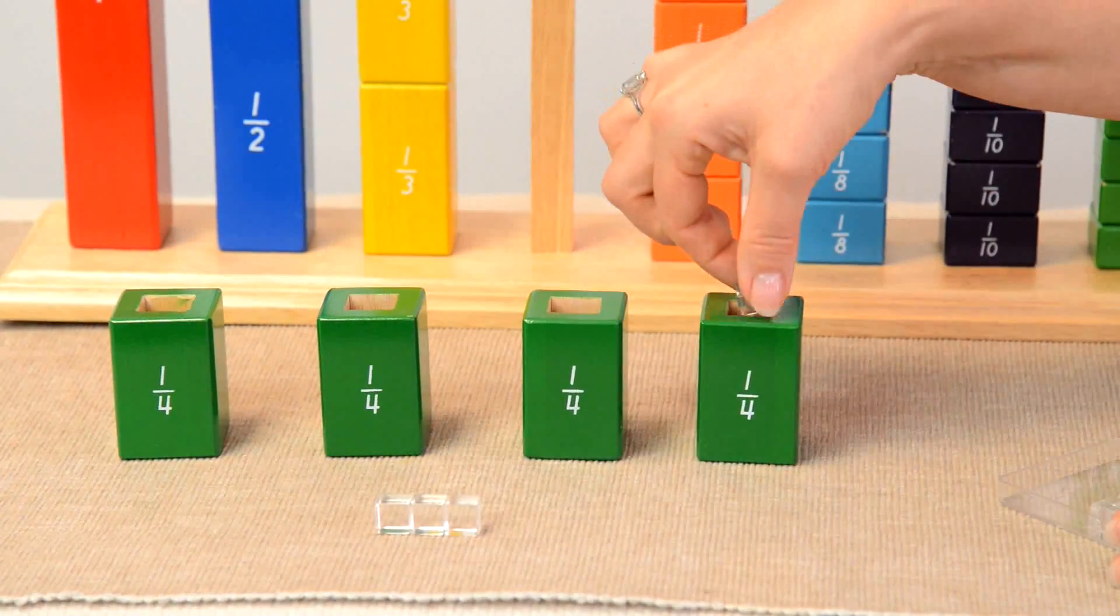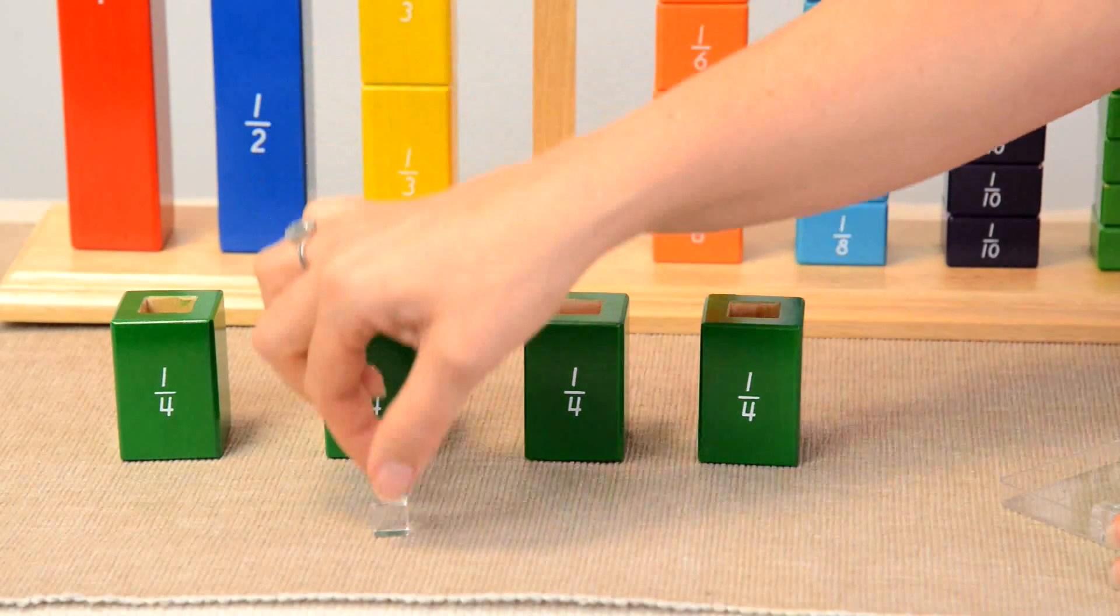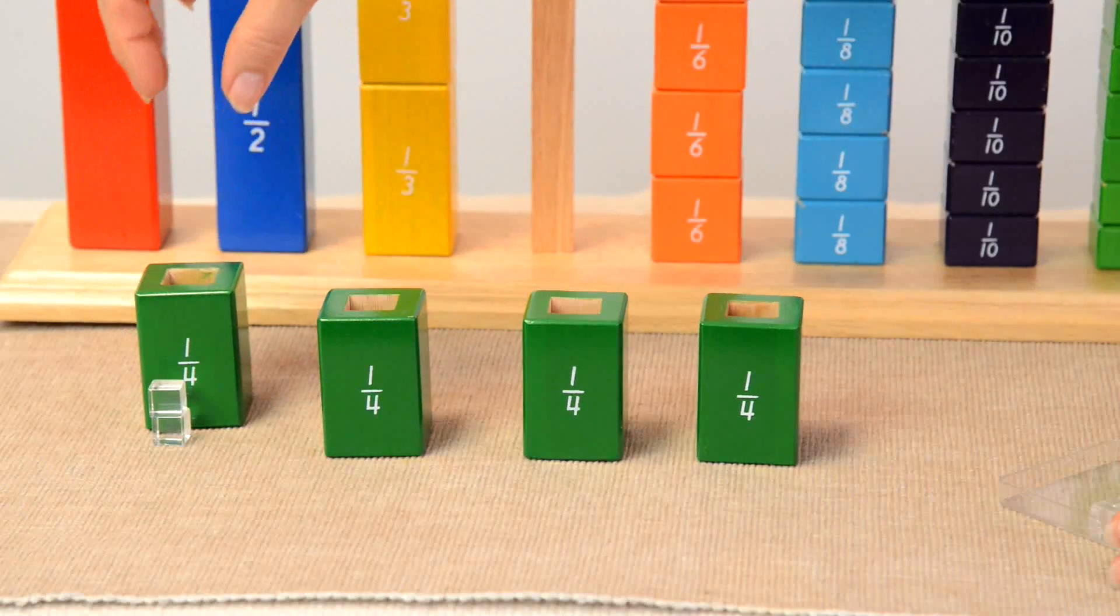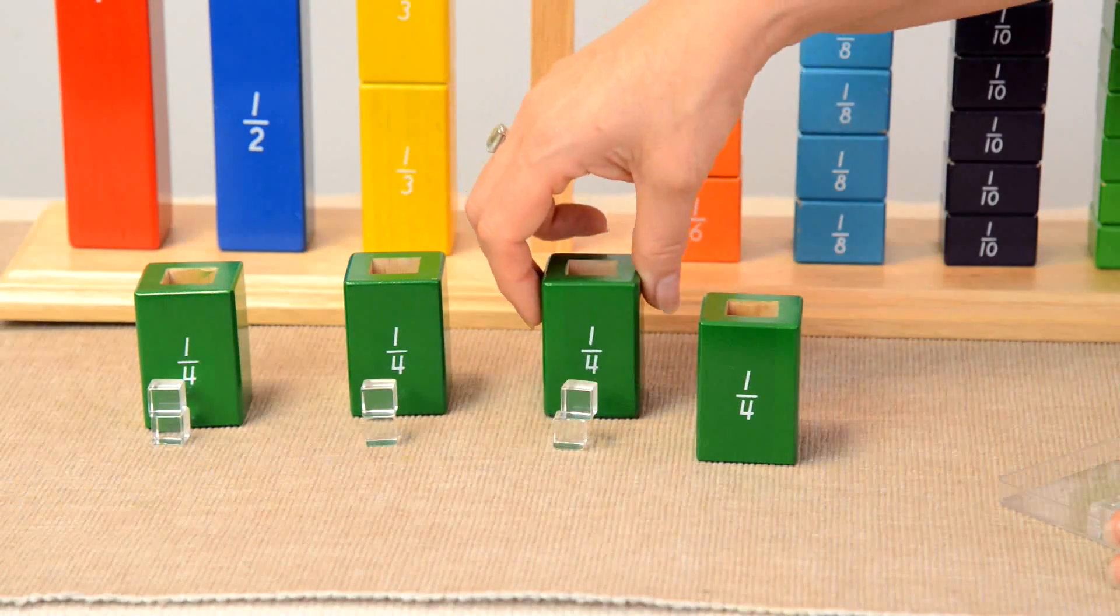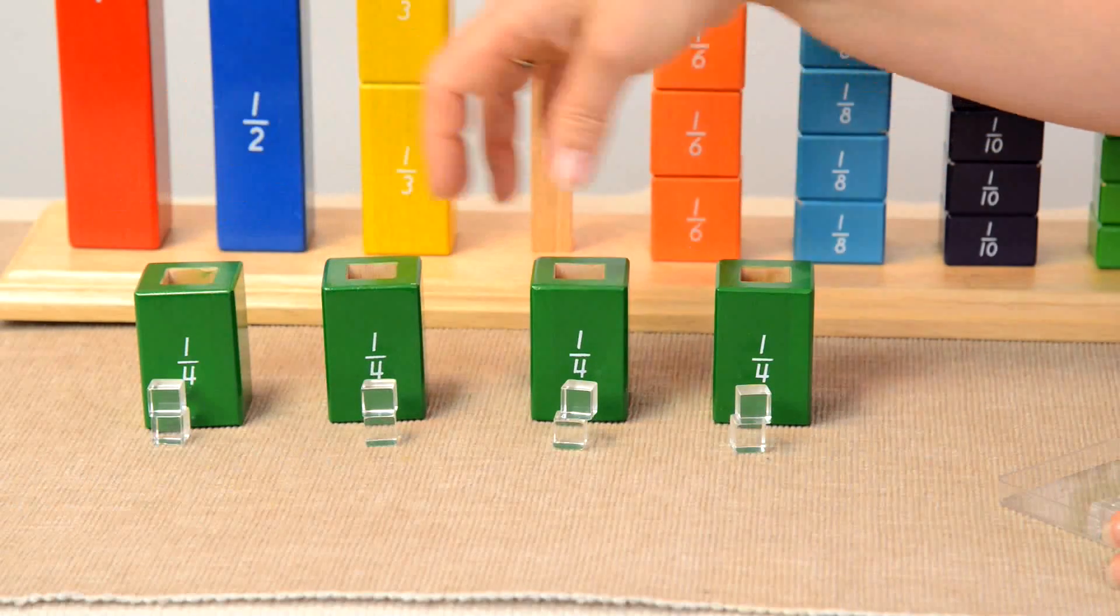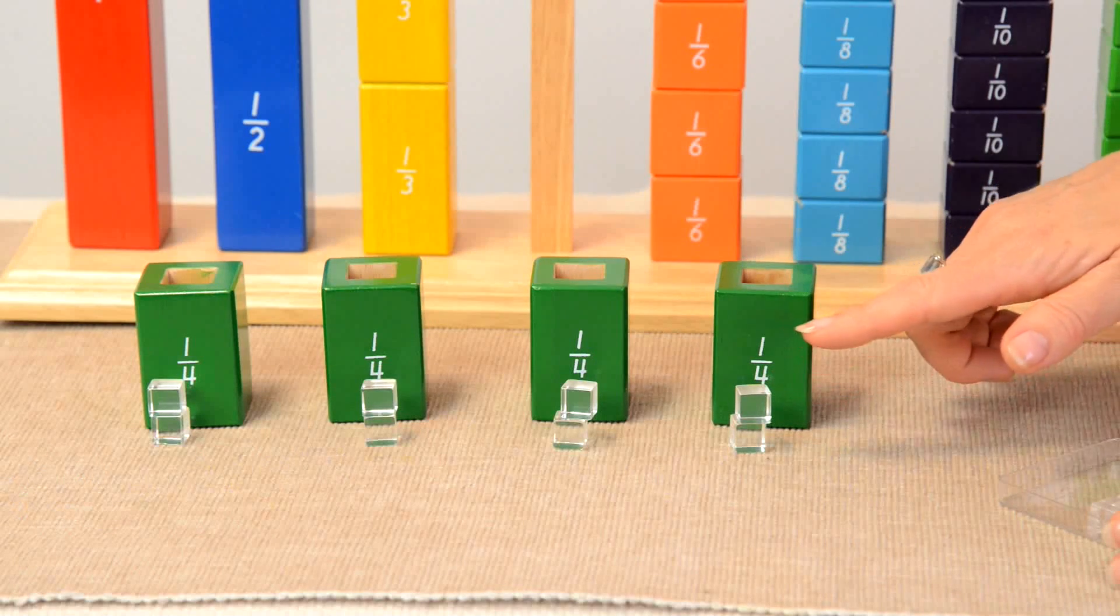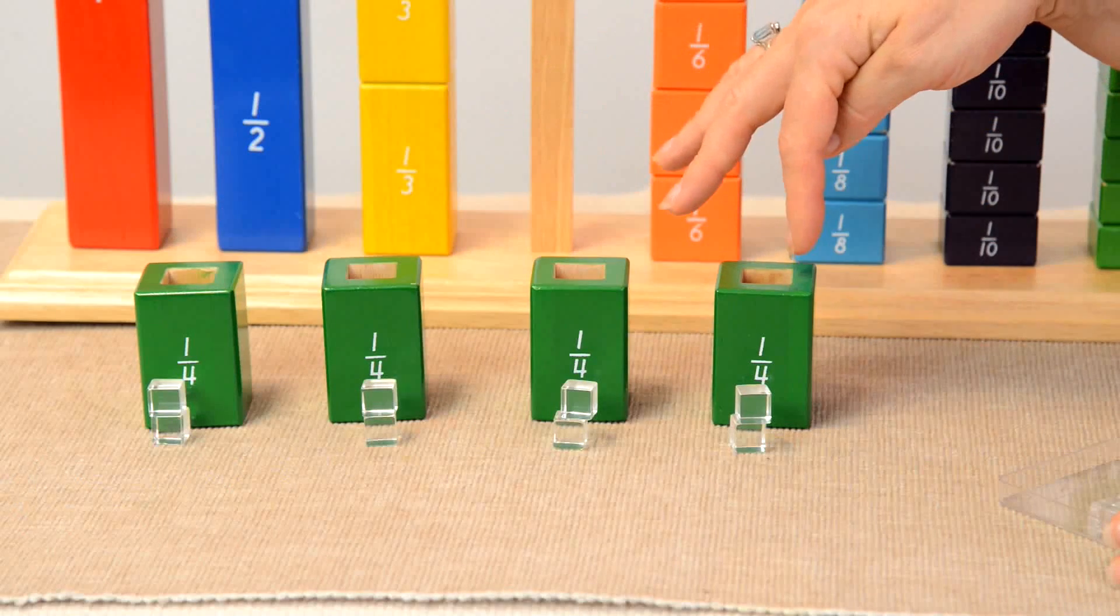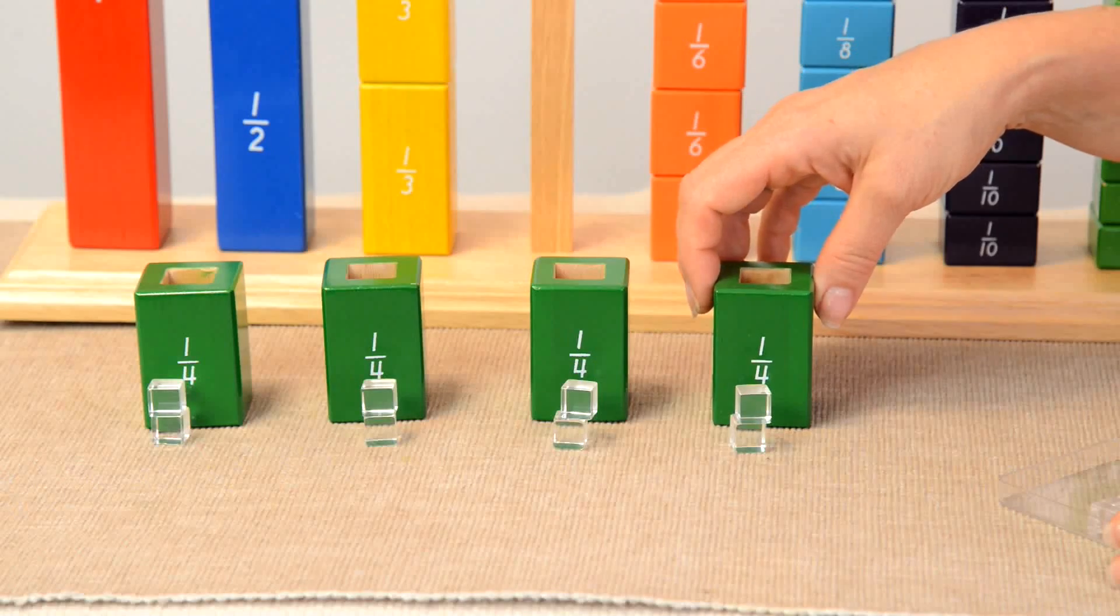And I can do it by giving each fractional part an equal share. So eight distributed out means one fourth of eight is two. Now this, if the child has had the divisional work with the golden beads should be familiar and should help imply without you even saying anything, the relationship between fractions and division. Now you can see why this would be attractive.